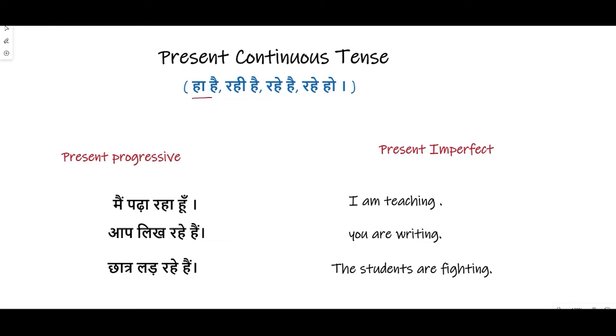We have studied the sentence structure and discussed it. Mainly it is called by two names. What are the two names? Present progressive tense and present imperfect tense. But mainly we explain it as present continuous tense.